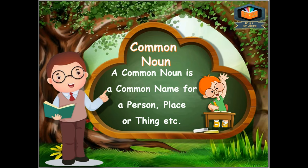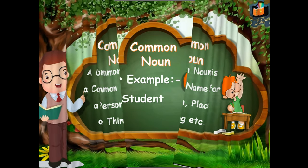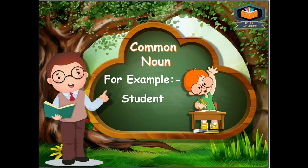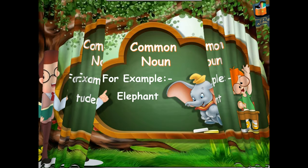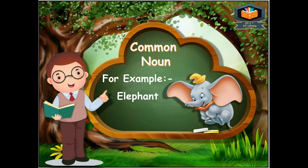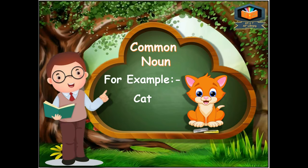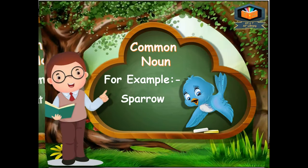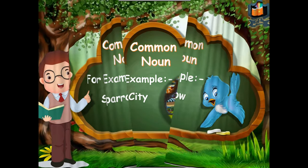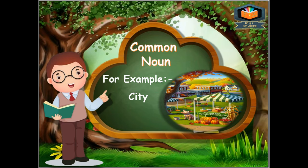Let's discuss the first kind of noun — common noun. A common noun is a common name for a person, a place, or a thing, etc. For example: student is a person; elephant and cat are names of animals; sparrow is the name of a bird; city is a name of a place.